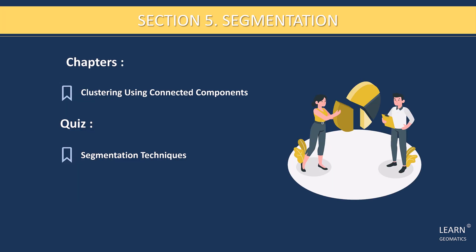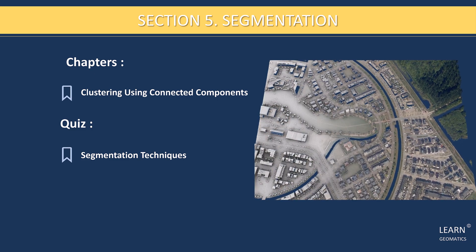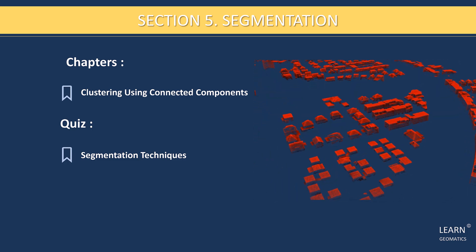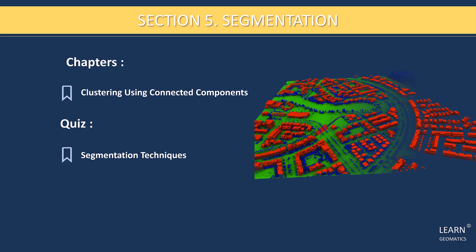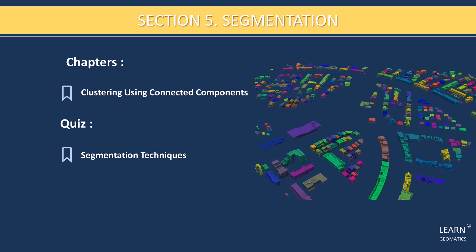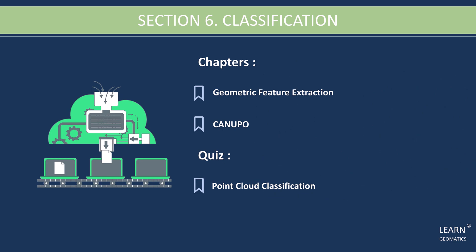Segmentation is the focus of section five. We'll start by discussing clustering using connected components, which is a simple and effective way of grouping together adjacent points that share similar characteristics. Then, we'll apply this technique to make an instant segmentation of buildings — the individualization of each building in the Point Cloud. This is particularly useful for tasks such as building modeling, assessment of building condition, and change detection over time. By the end of this section, you will be able to perform efficient and accurate segmentations of your Point Clouds in Cloud Compare.